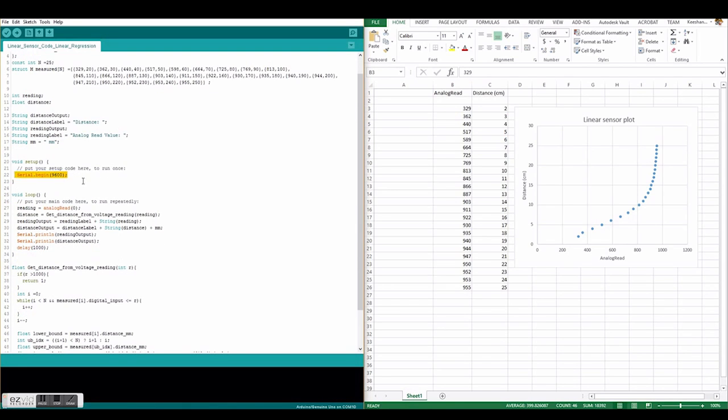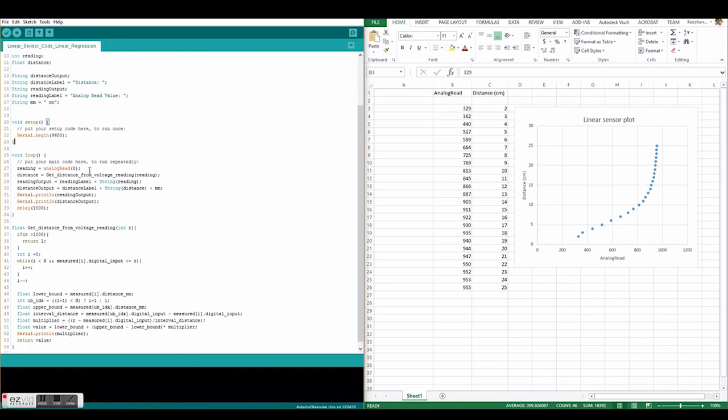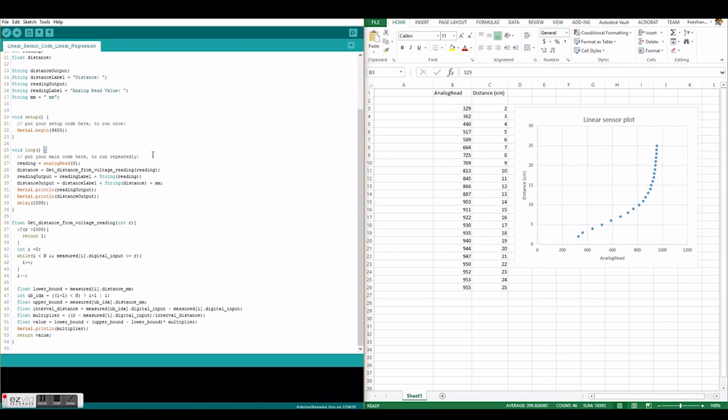This loop allows us to read the analog zero pin at every one second. It also calls the function get distance from voltage reading which actually allows us to do the linear interpolation.